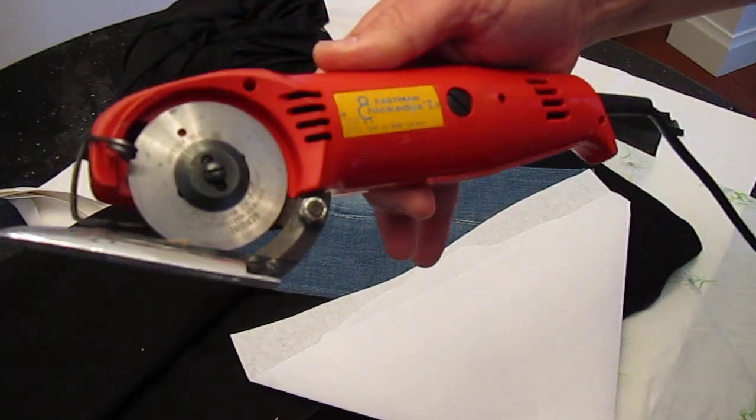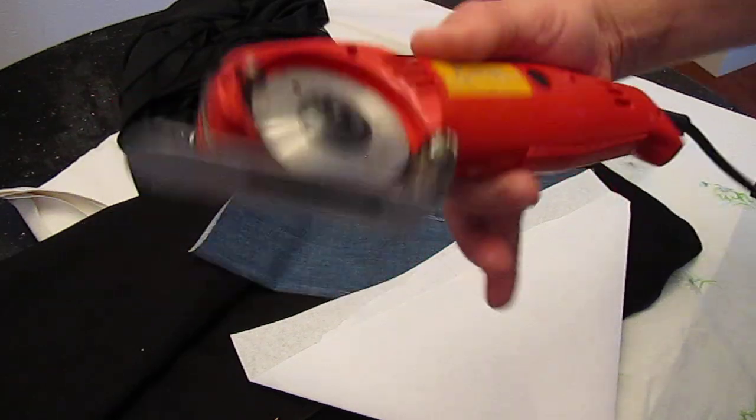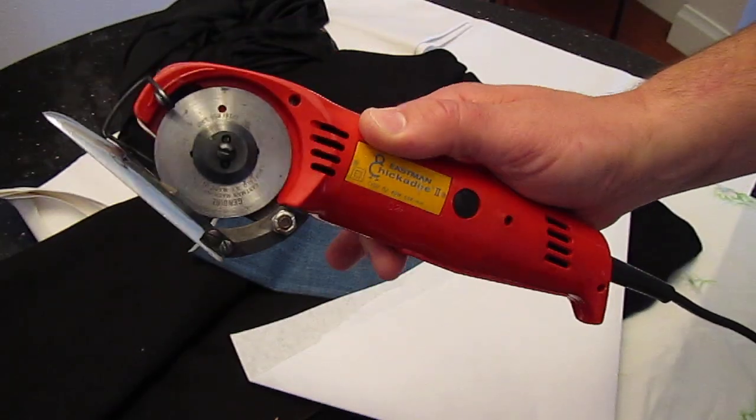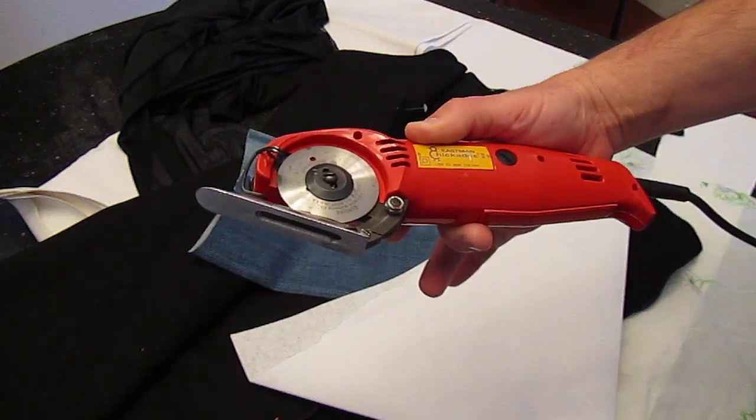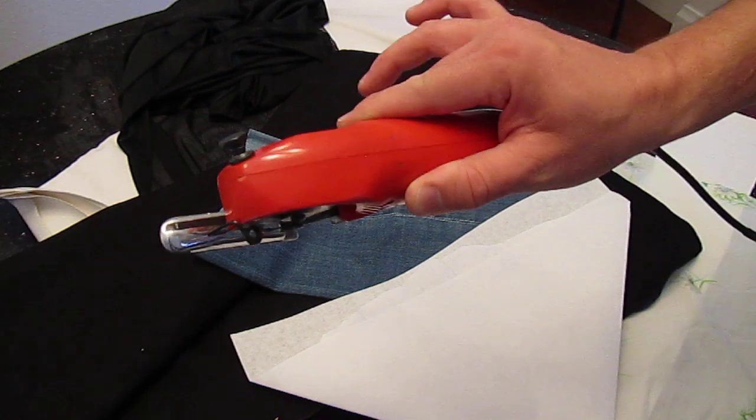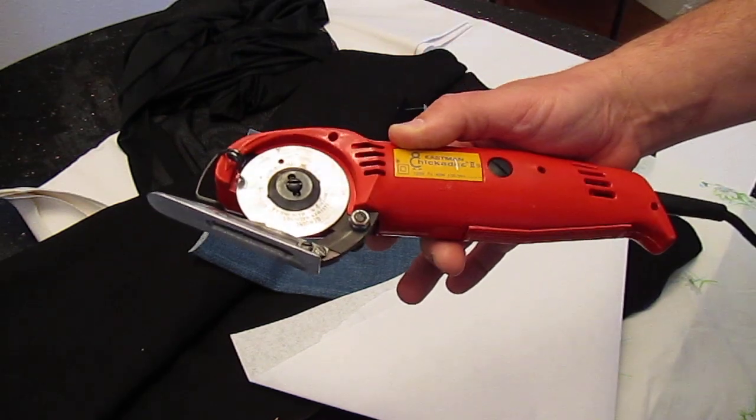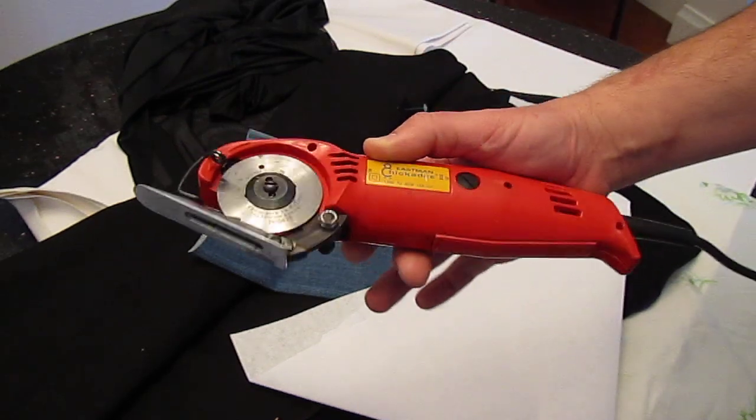This is the Eastman Chickadee 2. I picked this up off of eBay a few years back, but just recently, a friend of mine was asking about scissors and cutting materials, and this brought up into the topic of conversation.